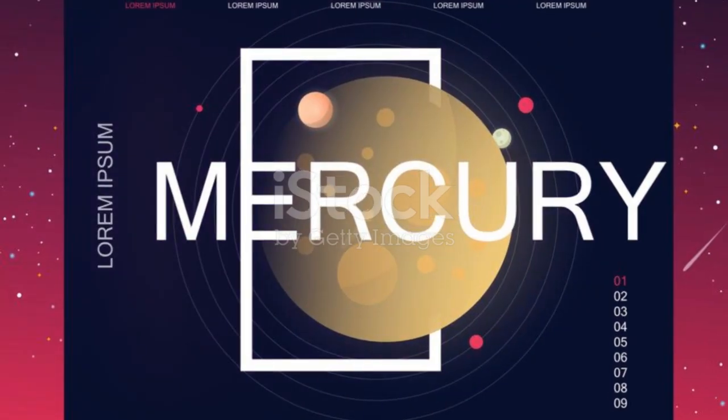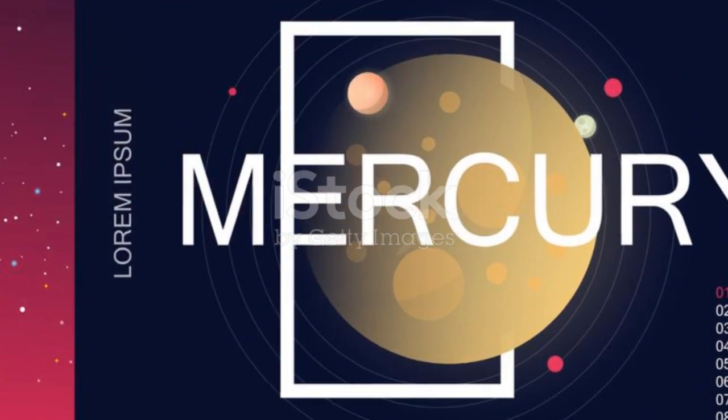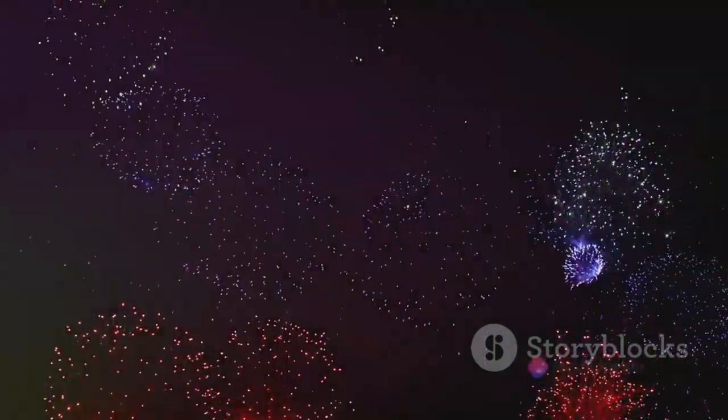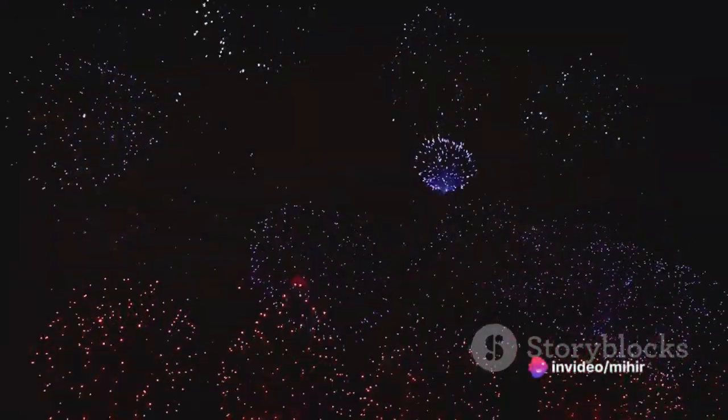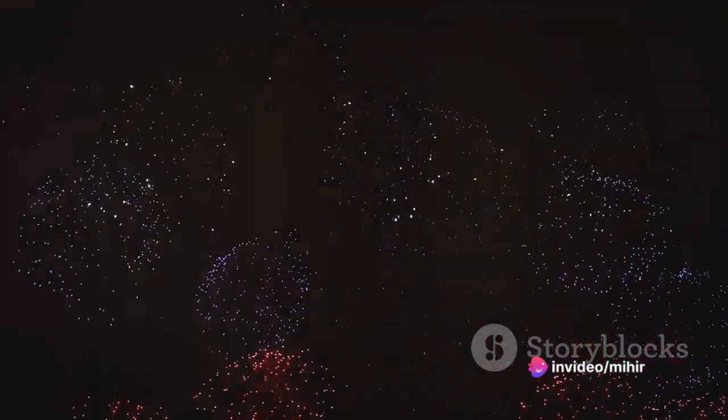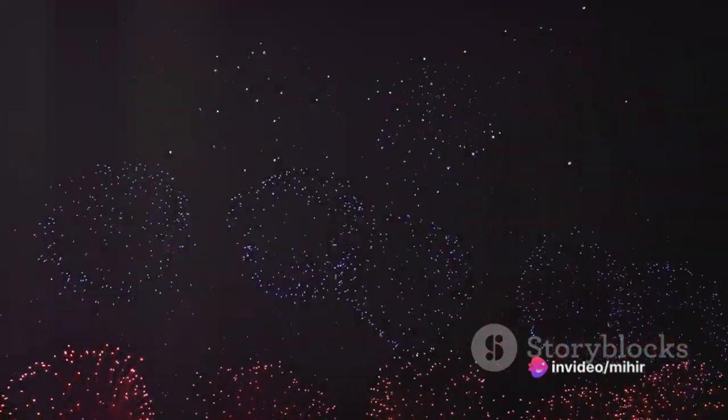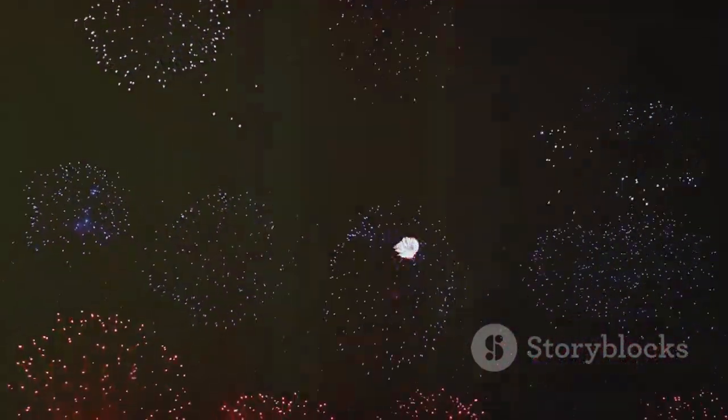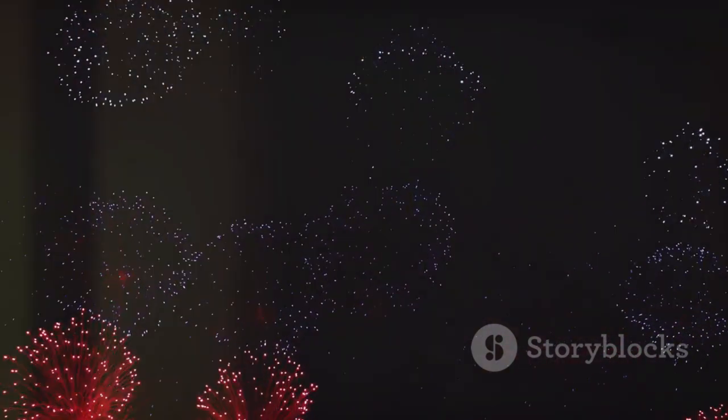Mercury, the smallest planet in our solar system and the closest to the sun, is a world of extremes. Its surface is pockmarked with craters from countless meteor impacts. Despite its proximity to the sun, Mercury experiences wildly fluctuating temperatures with scorching days and freezing nights.